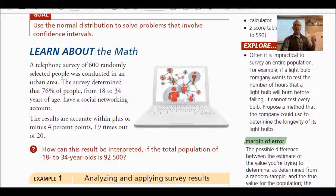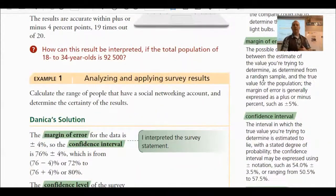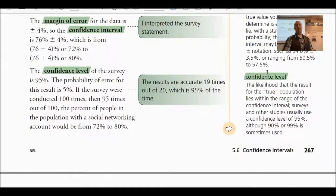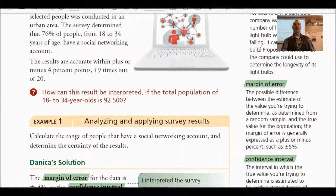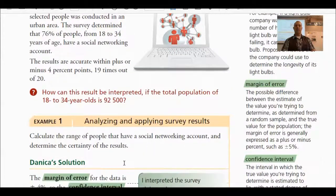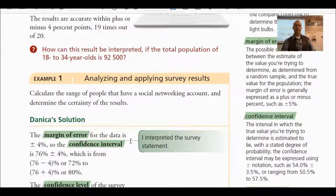So we're talking about when data, when statistics are reported, there's something called a margin of error, there's something called a confidence interval, and there's something called a confidence level. We want to differentiate between those three things here today, and what we'll do is go over example one.